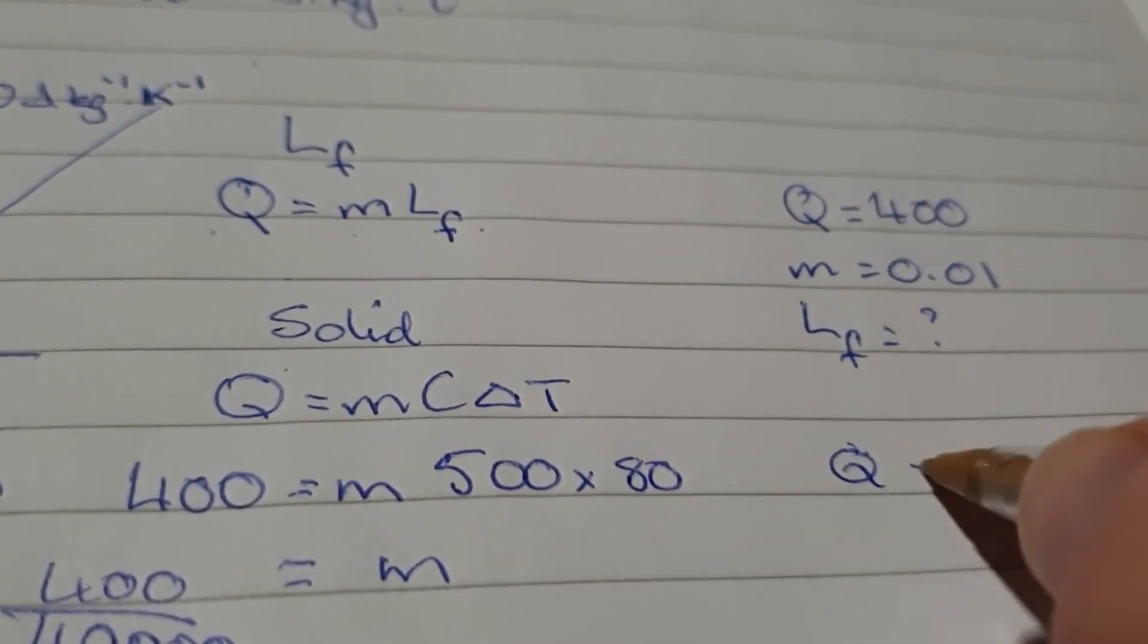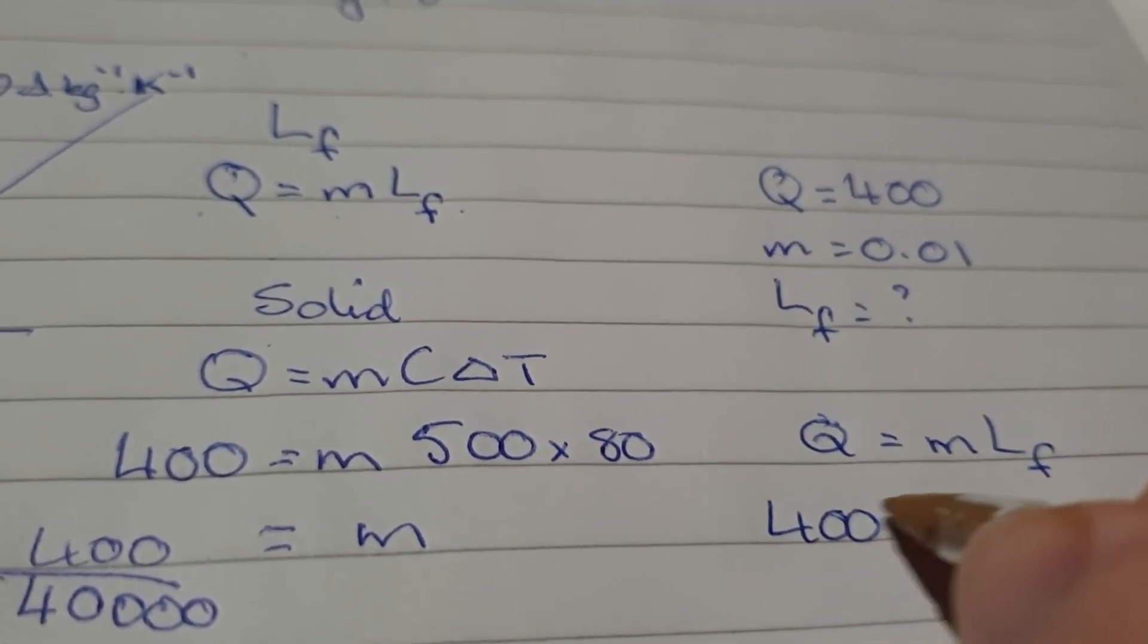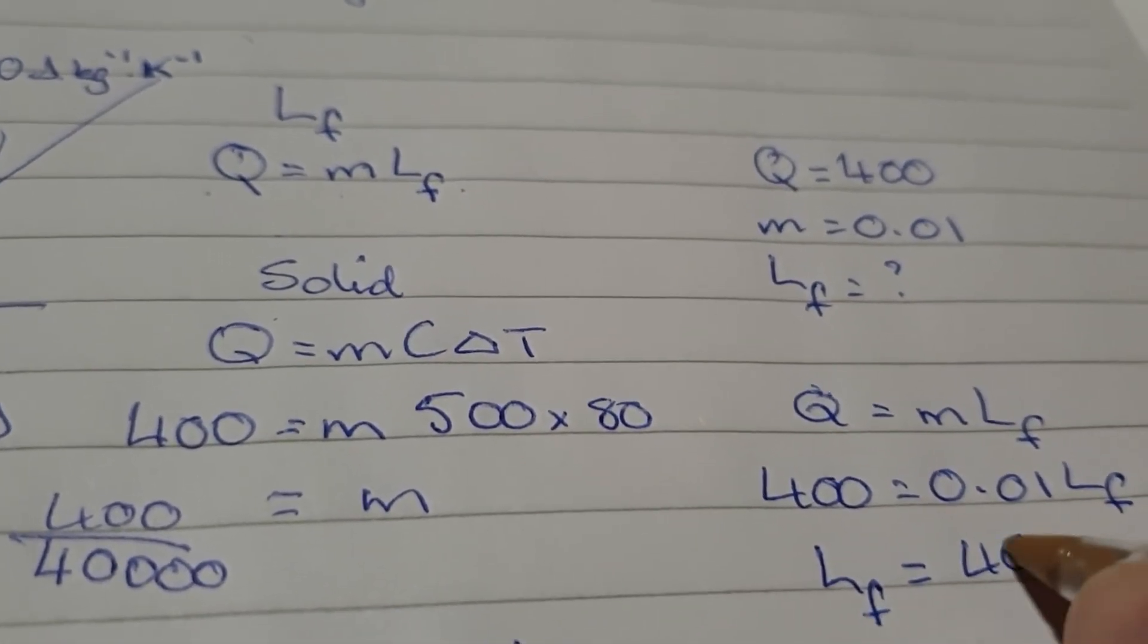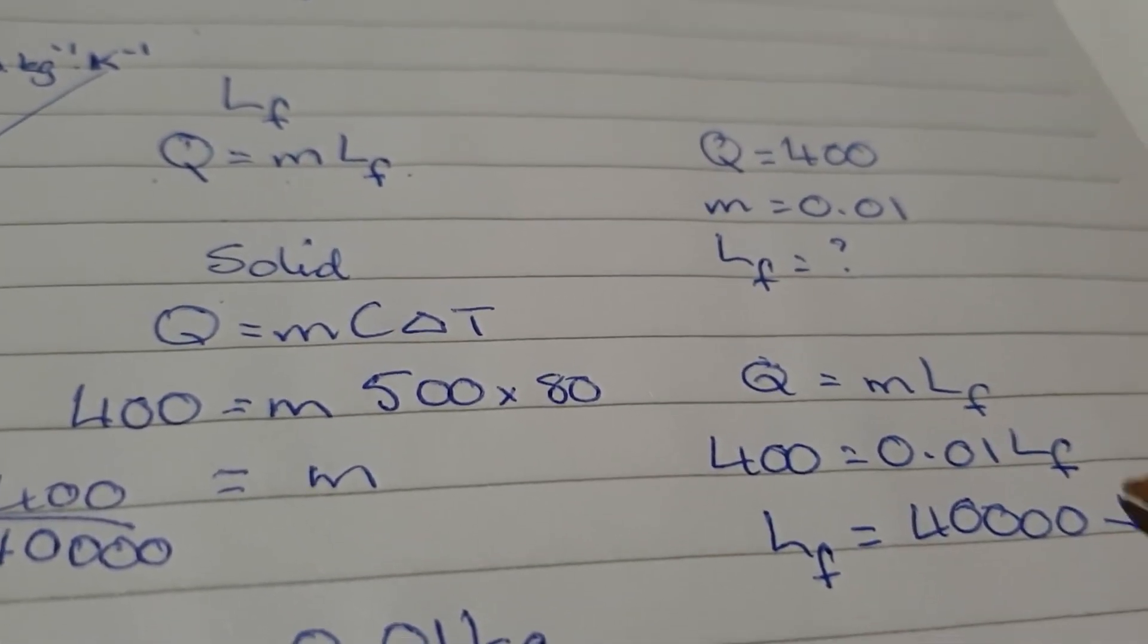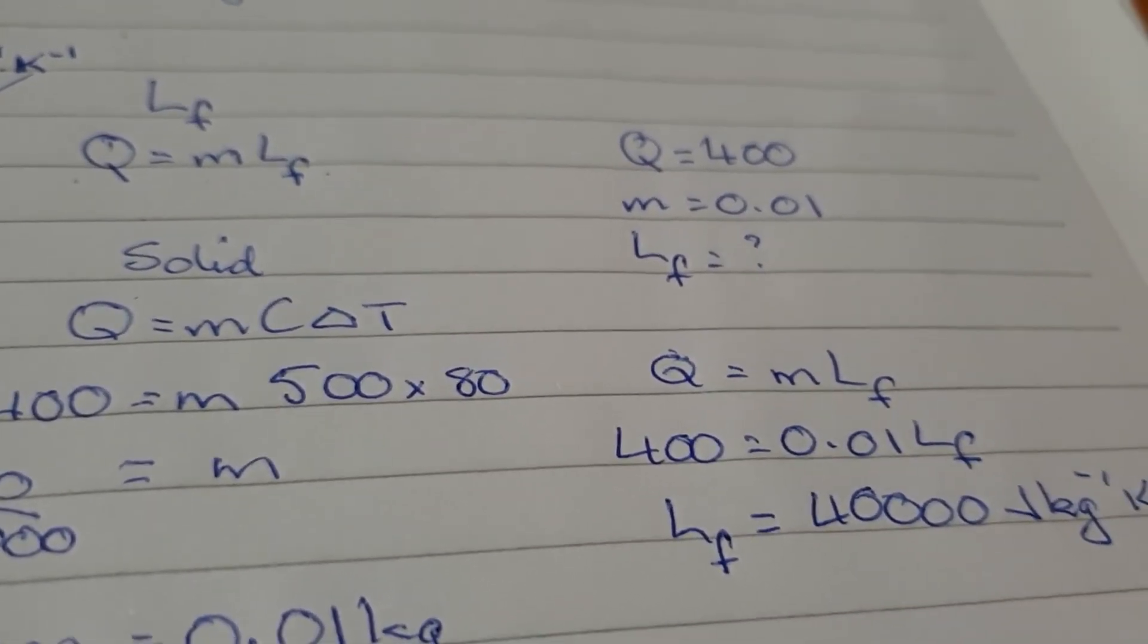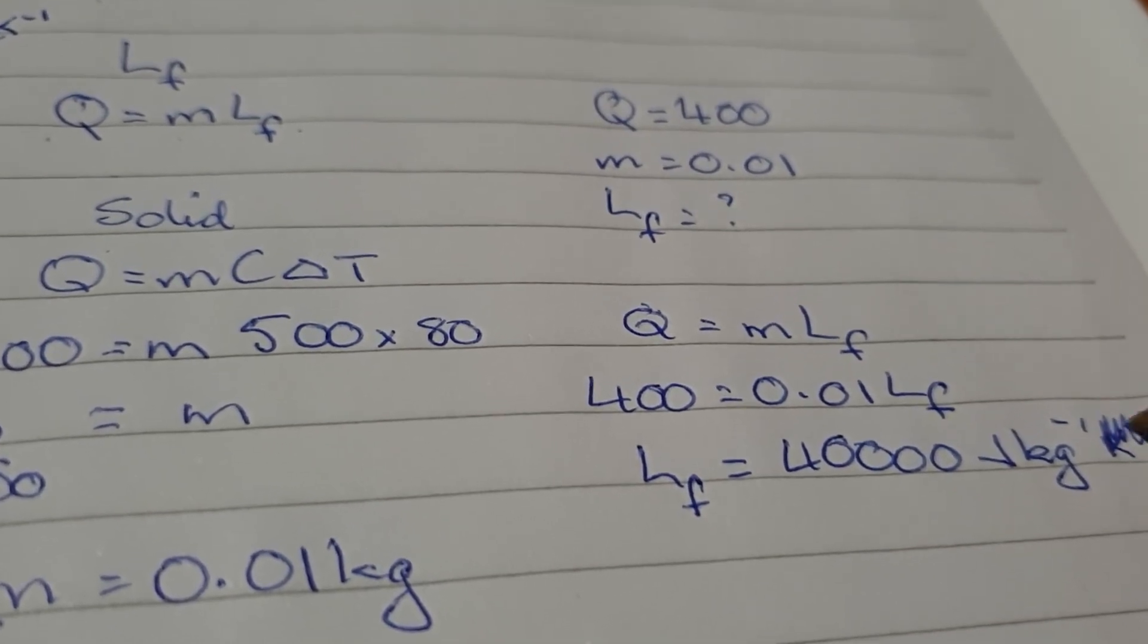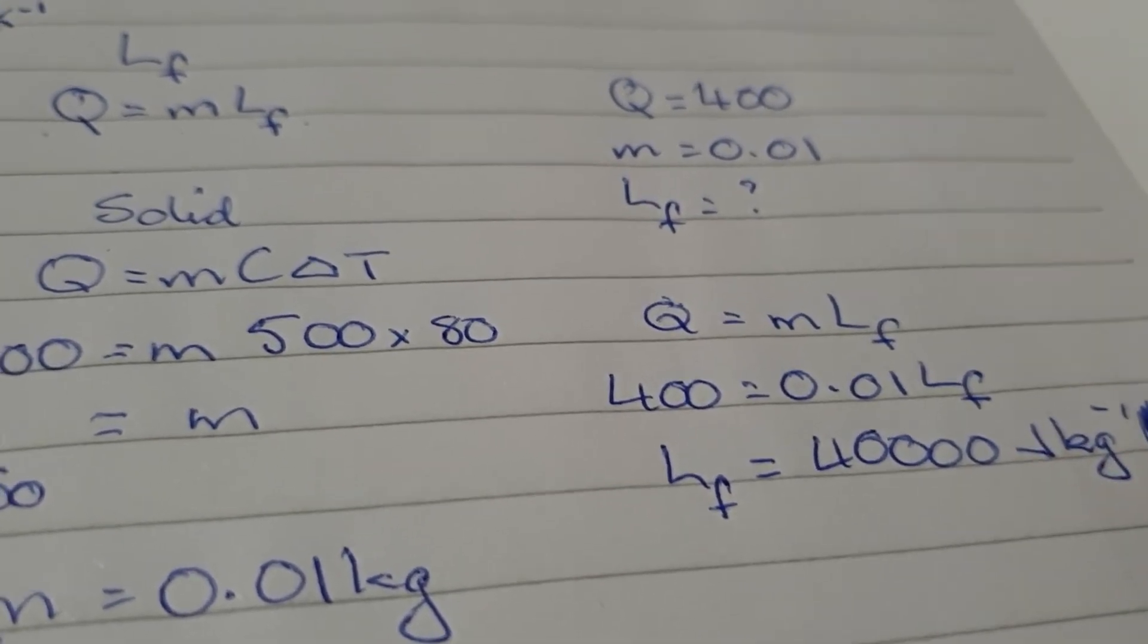So, we've got Q equals MLF, 400 equals 0.01 times LF. So, LF equals 40,000 joules per kilogram per Kelvin. Done. No, it's not. There's no Kelvin. Because it's not changing temperature. Ha-ha. It's just joules per kilogram. Thank you.